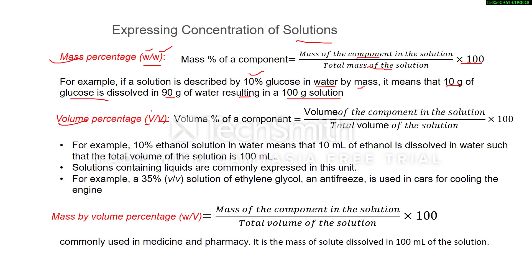Next is volume percentage (v/v): we take the volume of solute and volume of solution. Volume percentage equals volume of the component (solute) divided by total volume of the solution, multiplied by 100. For example, 10% ethanol solution in water means 10 ml of ethanol dissolved in water such that the total volume of the solution is 100 ml. Solutions containing liquids are commonly expressed in this unit. Another example: a 35% v/v solution of ethylene glycol is known as antifreeze, used in cars for cooling the engine.